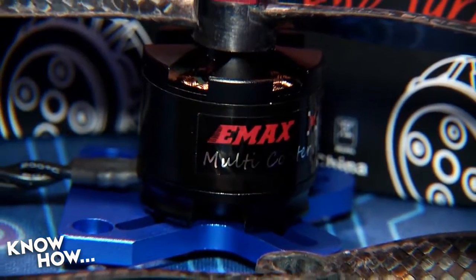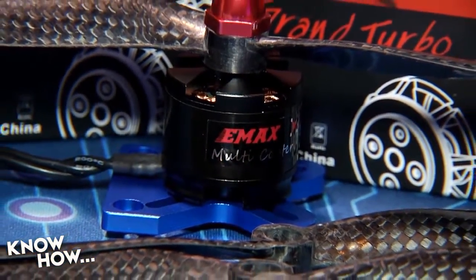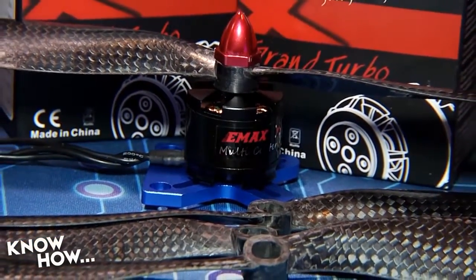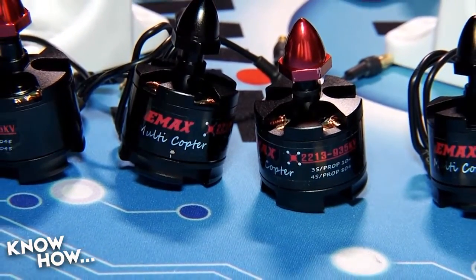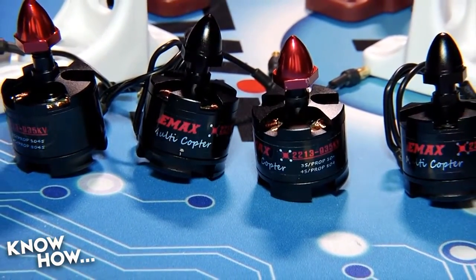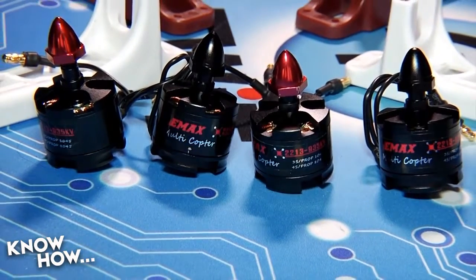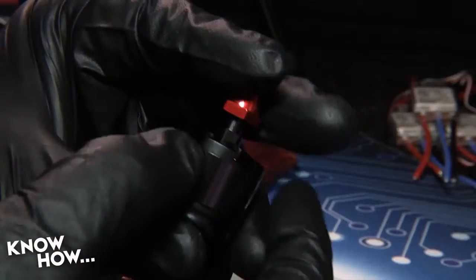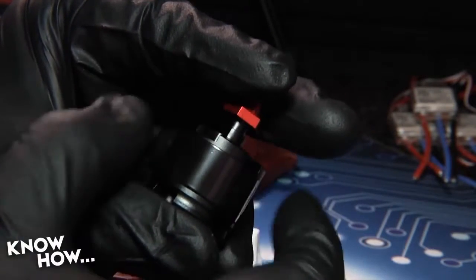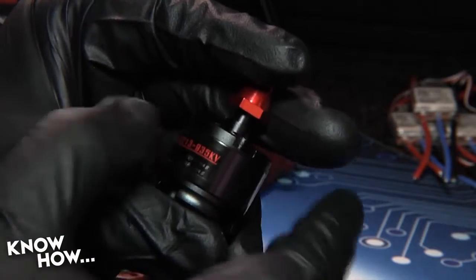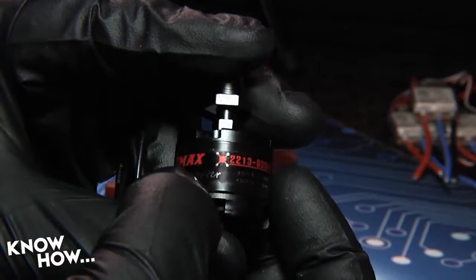For this build I've chosen a set of Emax 2213 motors that are rotation threaded. The two red cap motors are threaded to turn counter-clockwise while the two black cap motors turn clockwise. If you have a similar set of rotation threaded motors but are unsure of which way they are designed to operate, just remember that holding the prop nut while turning the motor in the direction it is supposed to turn will tighten the nut. If it loosens the nut, you've got the wrong one.